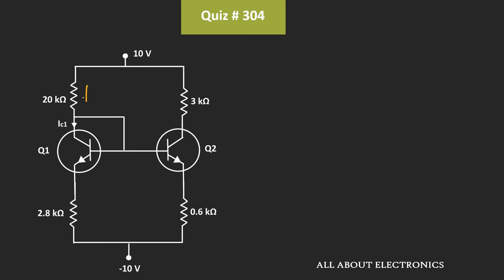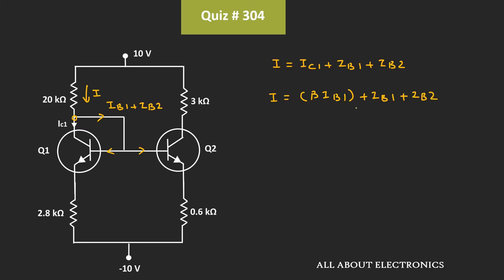So here, let's say this current is equal to I. And if we apply KCL at this node, then we can write: current I is equal to IC1 plus IB1 plus IB2, because the current going into these two terminals is equal to IB1 and IB2 respectively. That means this current I is equal to β plus 1 times IB1, plus IB2. Let's call this equation number 1.